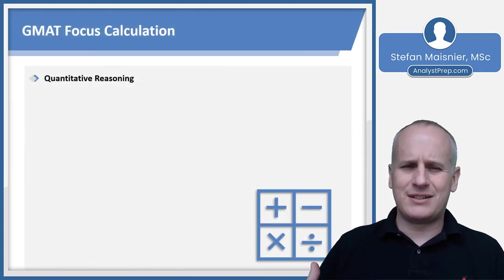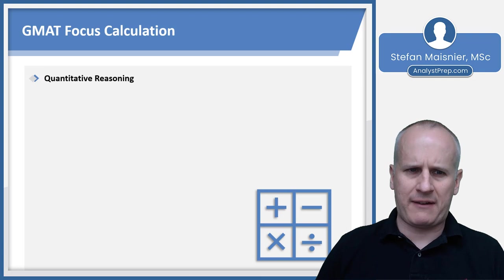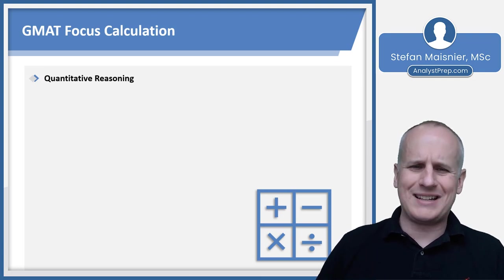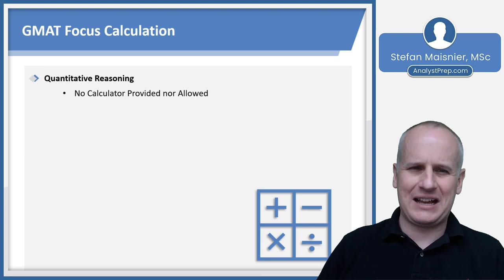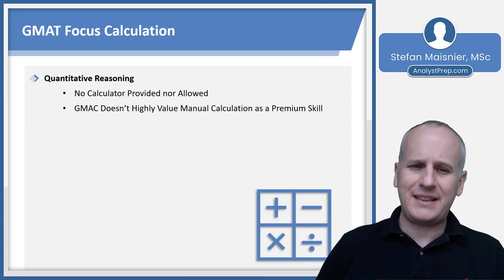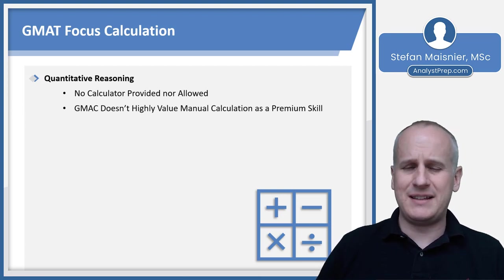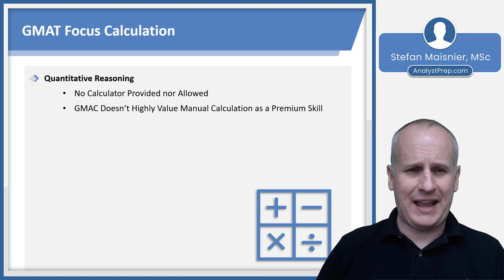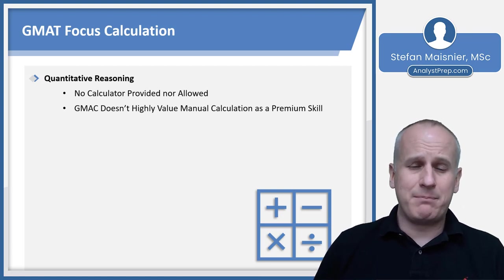Let's start by discussing how calculation is structured within the new GMAT focus. The quantitative reasoning section will still not allow a calculator. There's no interface calculator and you're not allowed to bring your own. But even though no calculator is provided, the GMAC does not necessarily value manual calculation as a premium skill. They just expect that GMAT test takers will be able to do basic four function calculations and manipulate numbers that are non-integers and exponential in format as a baseline skill.